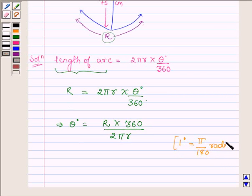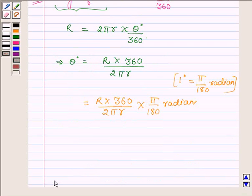this implies θ = (R × 360)/(2πr) × (π/180) radian. Now π cancels with π, 360 with 180, and 2 cancels with 2, so we are left with R/r radian.